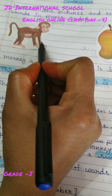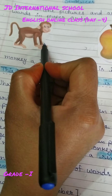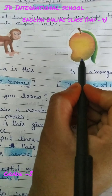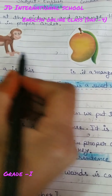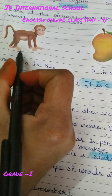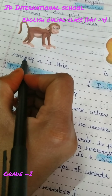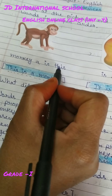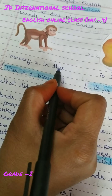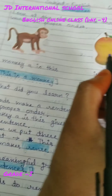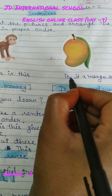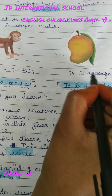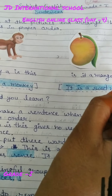What is this? Monkey. And what is this? Mango. In this picture, we see: 'monkey a is this' and 'here is it a mango sweet.'